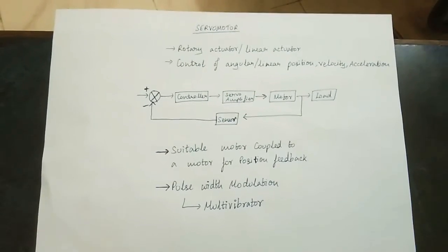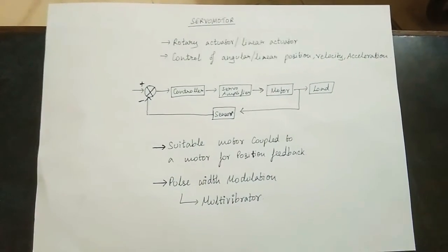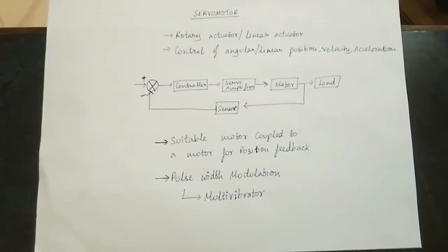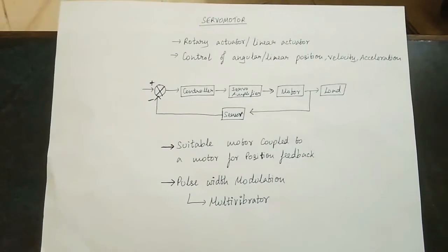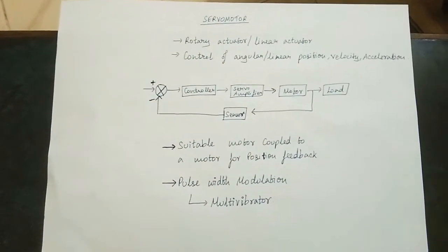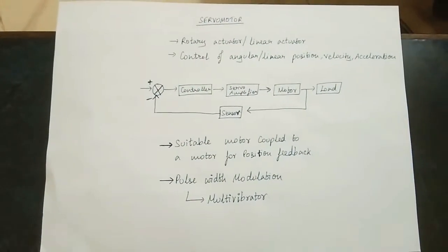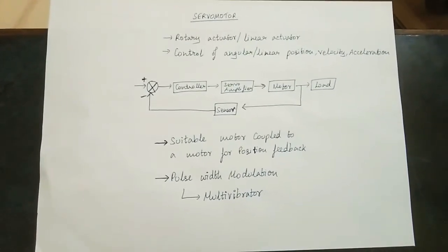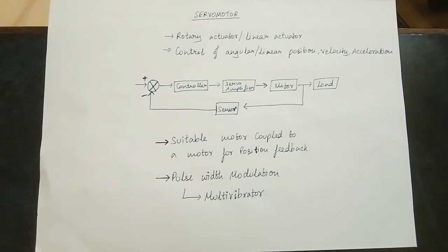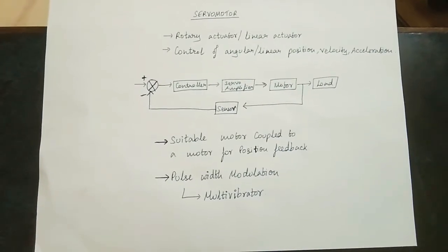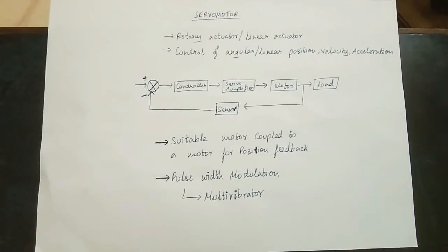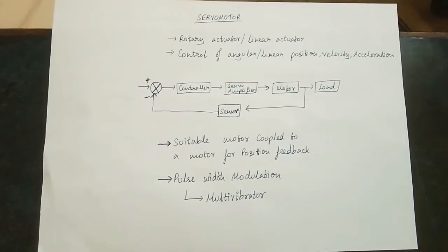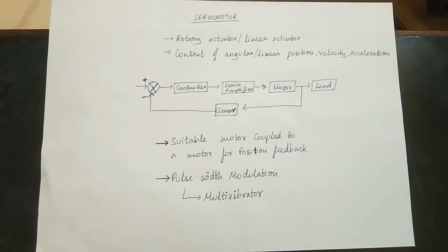We will talk about linear motion: Linear Position, Velocity, and Acceleration. The output is Linear Position, Velocity, and Acceleration. Position, Velocity, and Acceleration are physical terms. The output is either Velocity or Acceleration — all of this is a Linear Quantity or Angular Quantity. This is the feedback mechanism, and the output is an error signal.